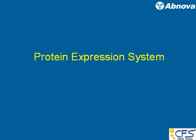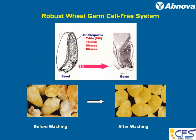The wheat germ-based protein expression system existed for a very long time, but it remained only an academic curiosity. The reason was simple: the system could not be robust — it could not be stable for more than a matter of minutes, and then became unstable. Then there was a discovery by Professor Yaeta Endo and his colleagues at Ehime University that the reason for instability was due to toxins or translation inhibitors, such as tritin, thionine, RNAs, and DNAs, as shown here.